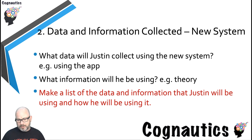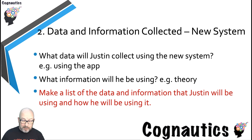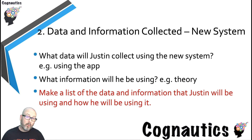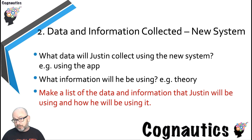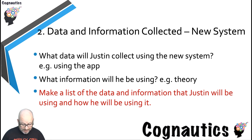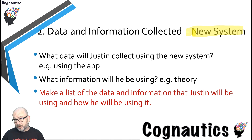So once you've established what Justin currently collects, you then need to think about how this is going to work in the new system. Don't forget you're going to be working with the same sorts of information — it's still going to be date and time that need to be collected. But if you look at his letter, he's looking at collecting more data, or collecting all the data into one place which is going to be the app. By this point you should be making two lists: one which is all of the data and information collected currently in his paper-based system, and secondly the data and information that will be collected by the new system — the app he wants you to make for him. You should have a list of currently collected and will be collected by the new system, and that should bring you to the end of this part of the task.